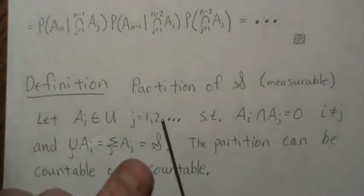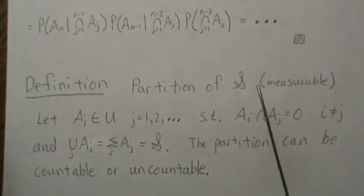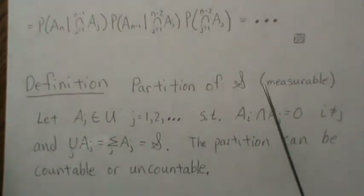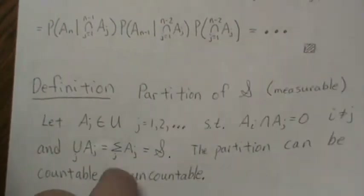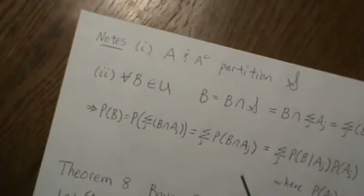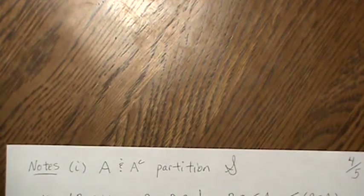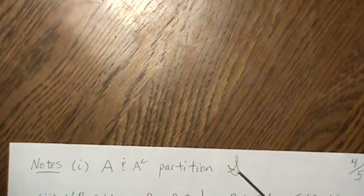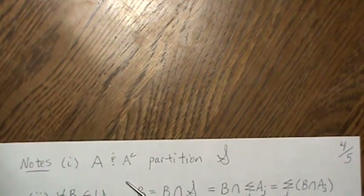For example, if you have the real number line and you break it up into intervals, that's a partition. Note that A and A-complement partition S, since they are disjoint and their union gives back the sample space — so that's a simple partition.